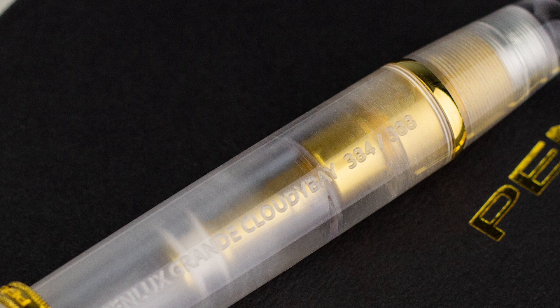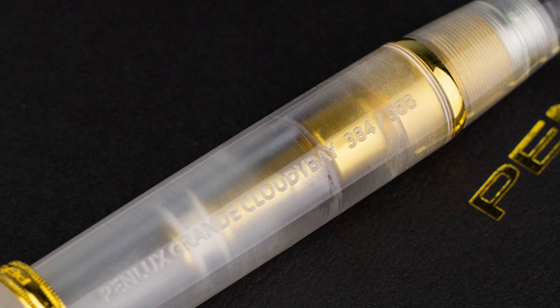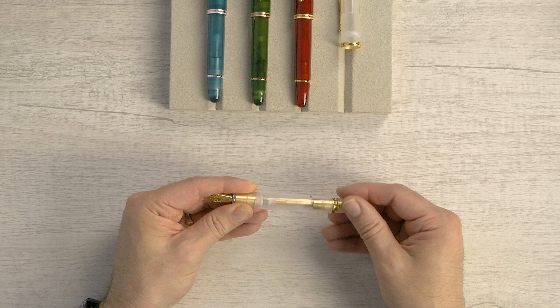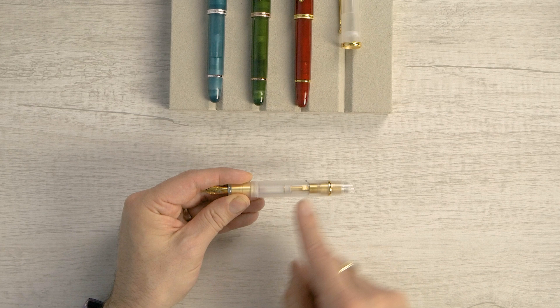And this one is a good one to show too. You can see it's got the nice gold collar here to match the nib. And then you can see everything in it. Now it is, it's cloudy, like the name suggests. But boy, that's neat to see. You see the brass piston mechanism.